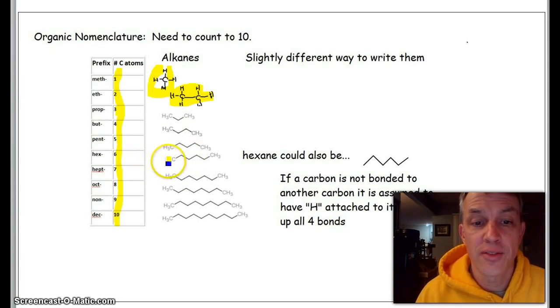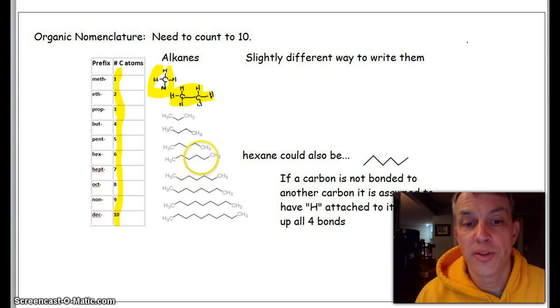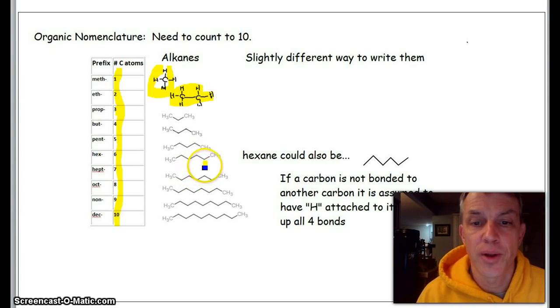It's the same for all of these. Hexane: one, two, three, four, five, six carbons. We can assume if a carbon is bonded to another carbon, to get four bonds to each carbon, there are H's that make that up.